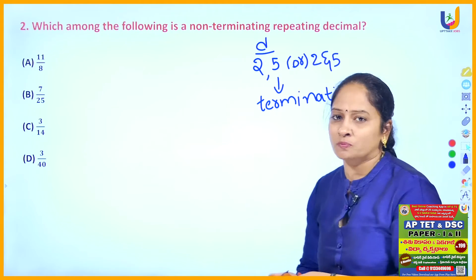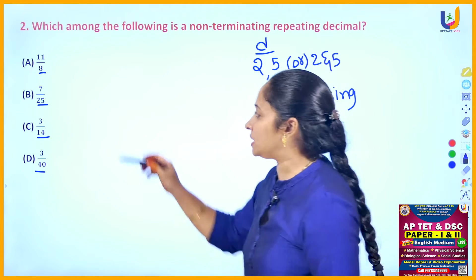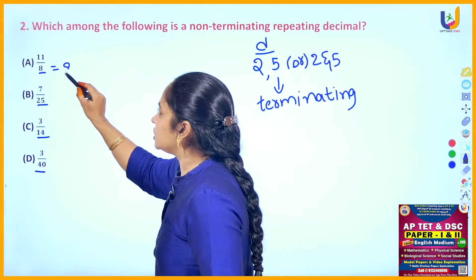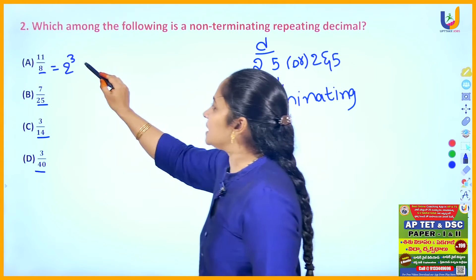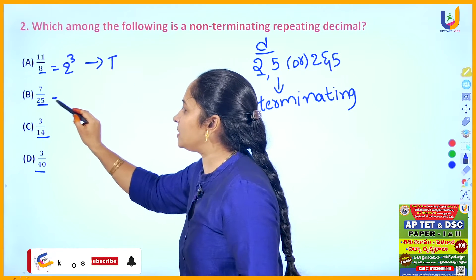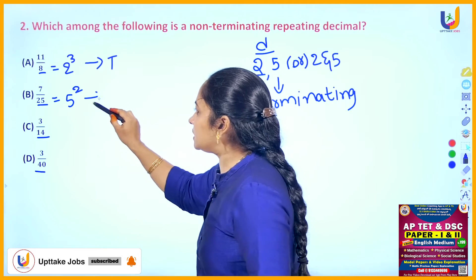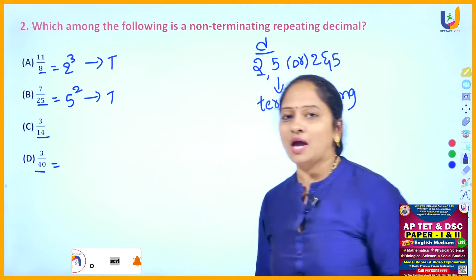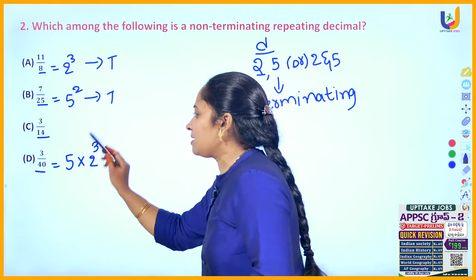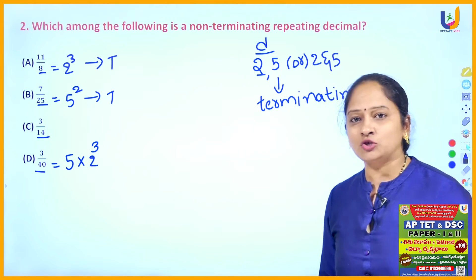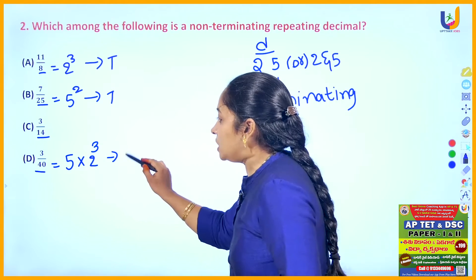Let us look at the given options and observe the denominators. In the first option we have denominator 8, which we can express as 2 cubed — so it is a terminating decimal. 25 can be written as 5 squared, so this is also terminating. The fourth option has 40, which we can write as 5 into 2 cubed — a combination of 5s and 2s, so it is also terminating.